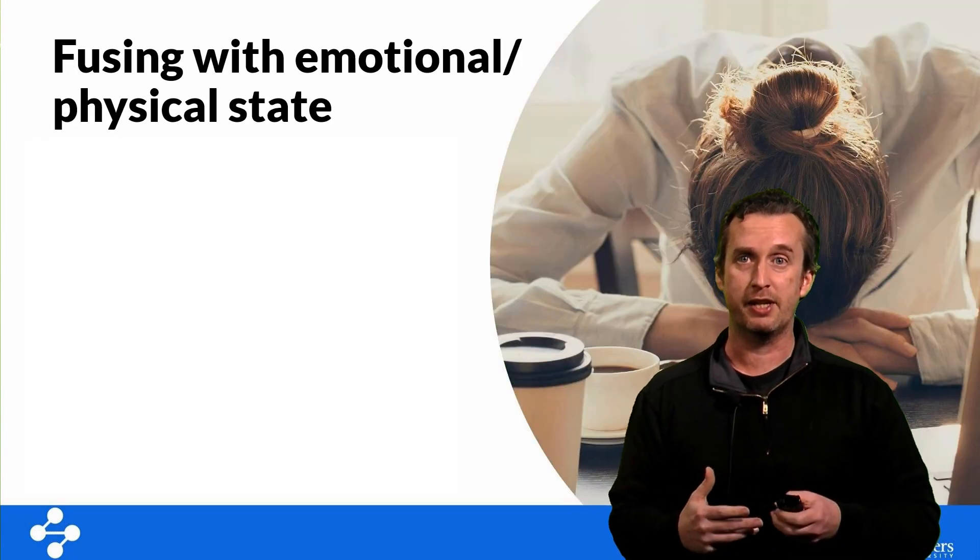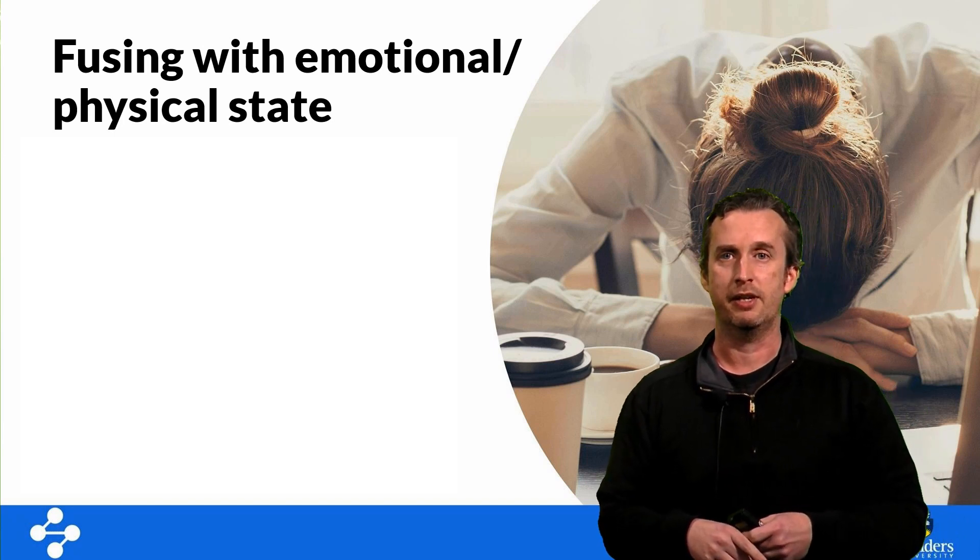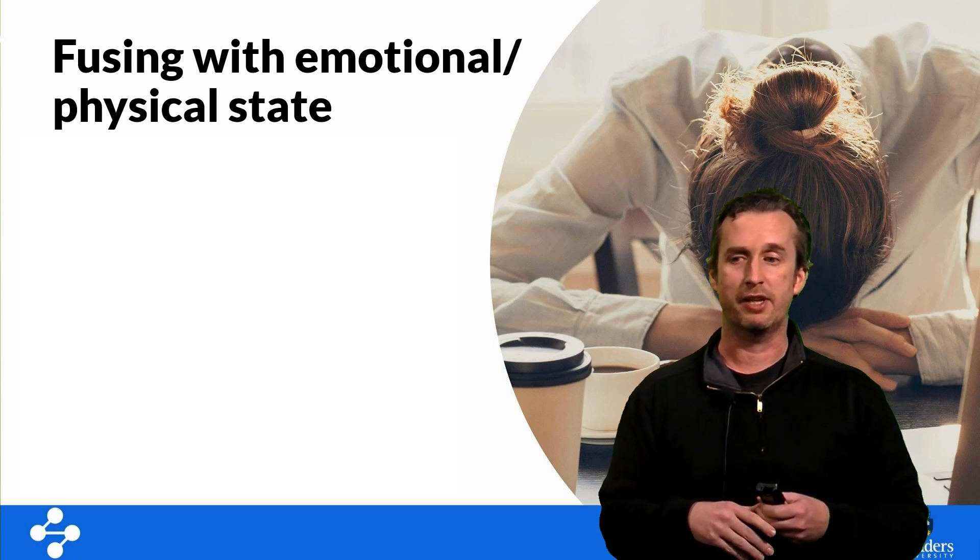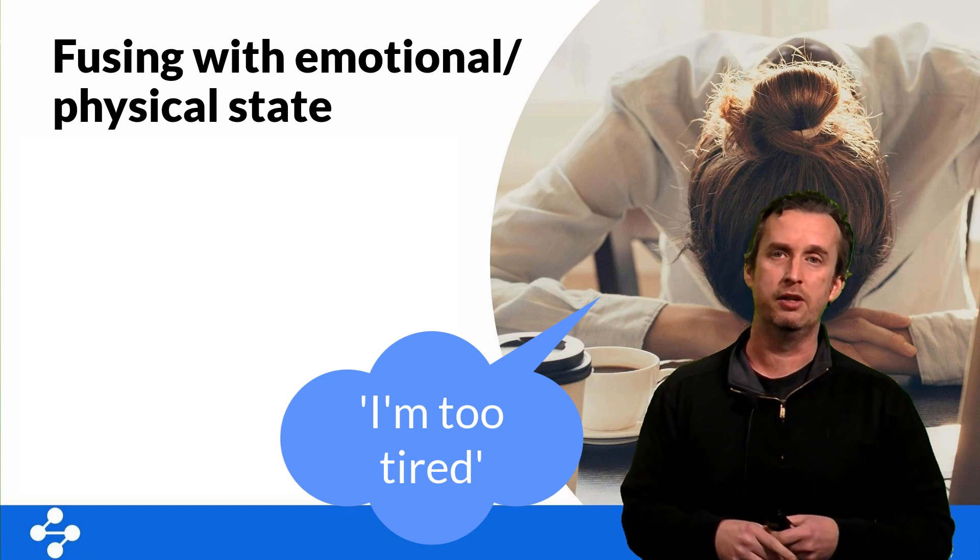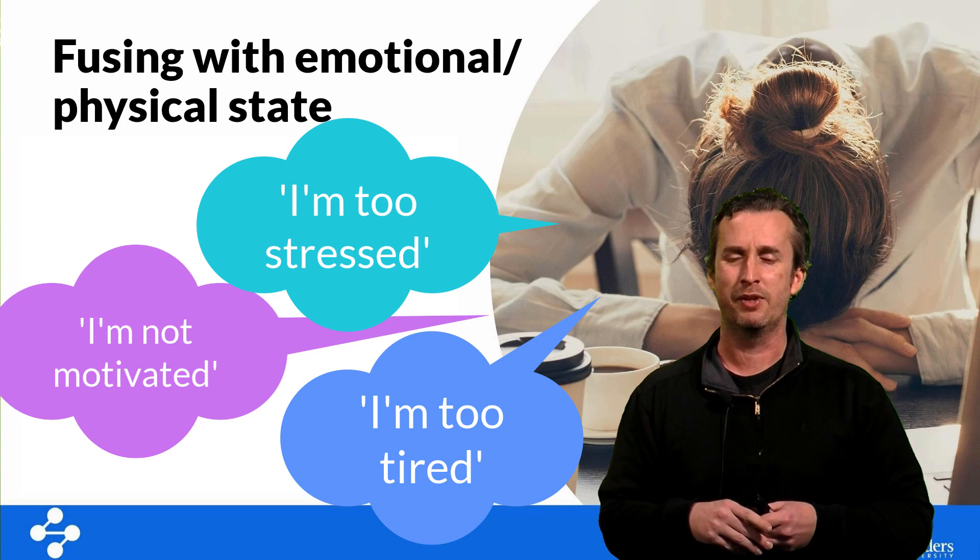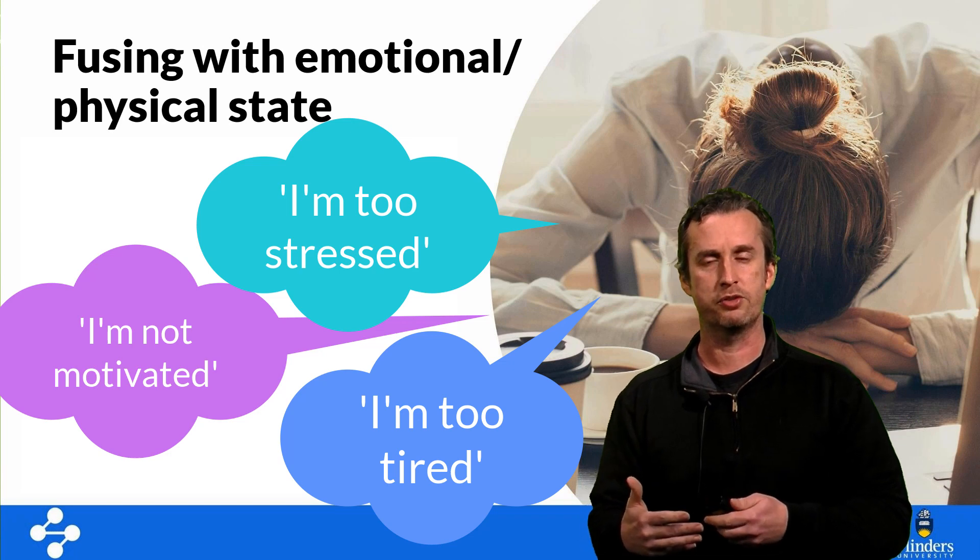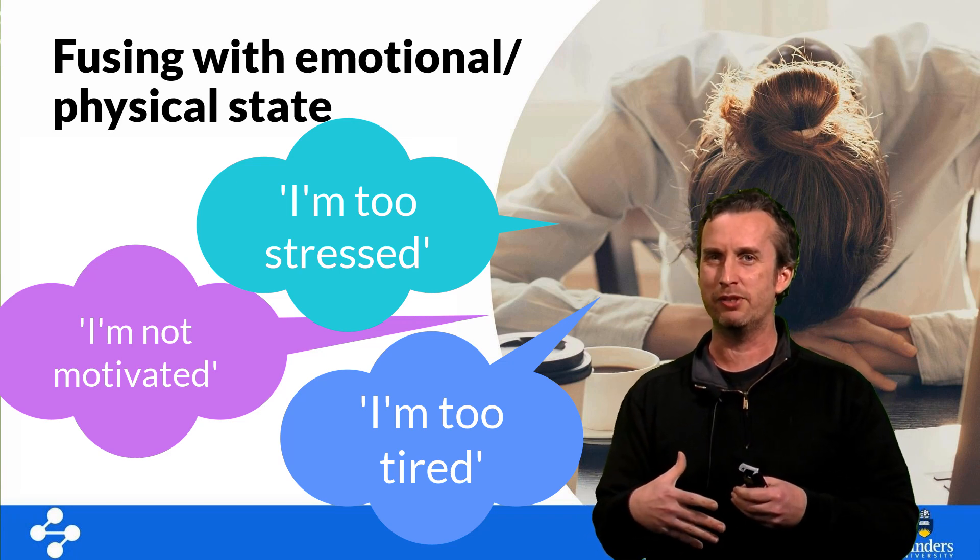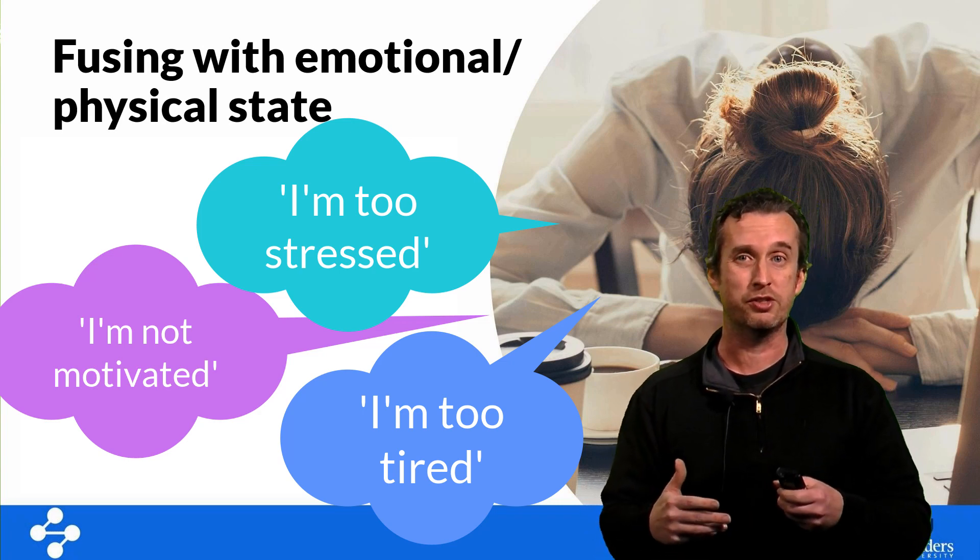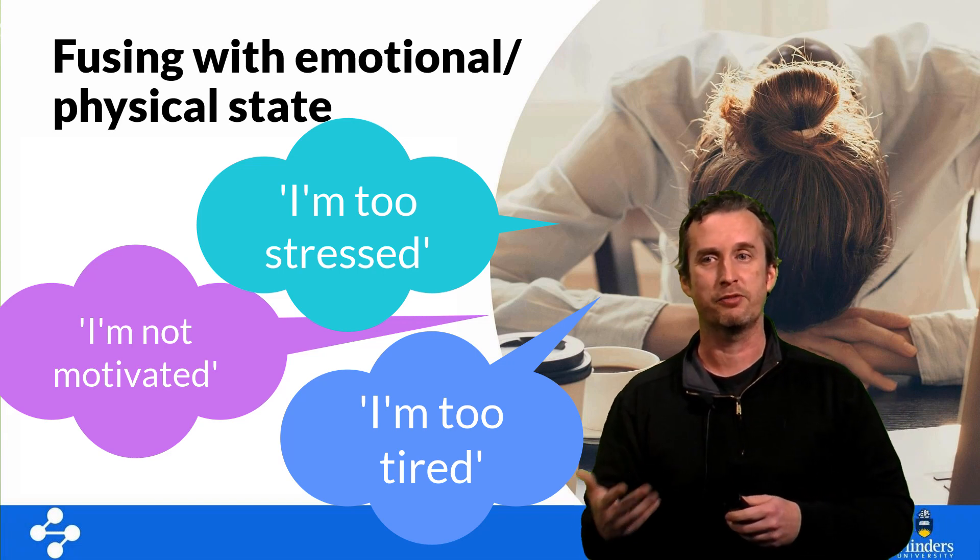The other thing that we do when we procrastinate is we come up with excuses or justifications for why we're not working on what we should be. Some of the most common involve what we call fusing with our emotional or physical state. So we say, I'm not working on this assignment because I'm too tired, or I'm too stressed, or I'm not motivated, or I'm all out of energy, or I don't feel like it. We use how we're feeling as an excuse for not having to do what it is we're supposed to. The problem is we're always going to have to be doing some of our work when we're not actually feeling that great. And the more we use this excuse, the more we limit the opportunities to work on the basis of how we're feeling at the time.